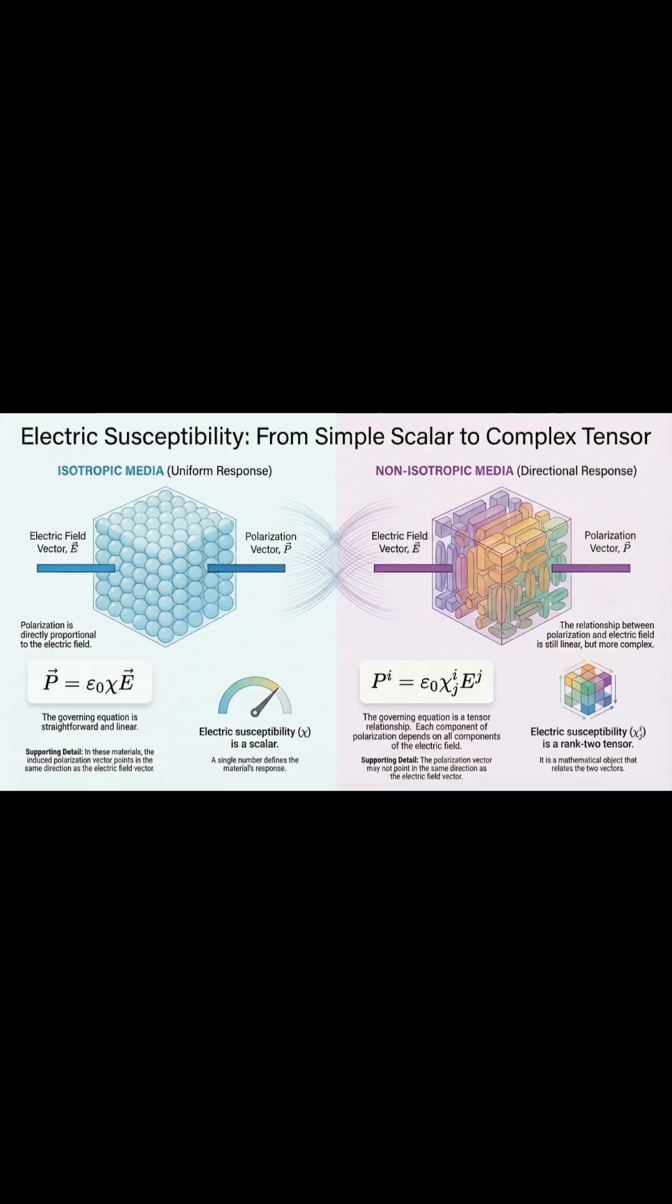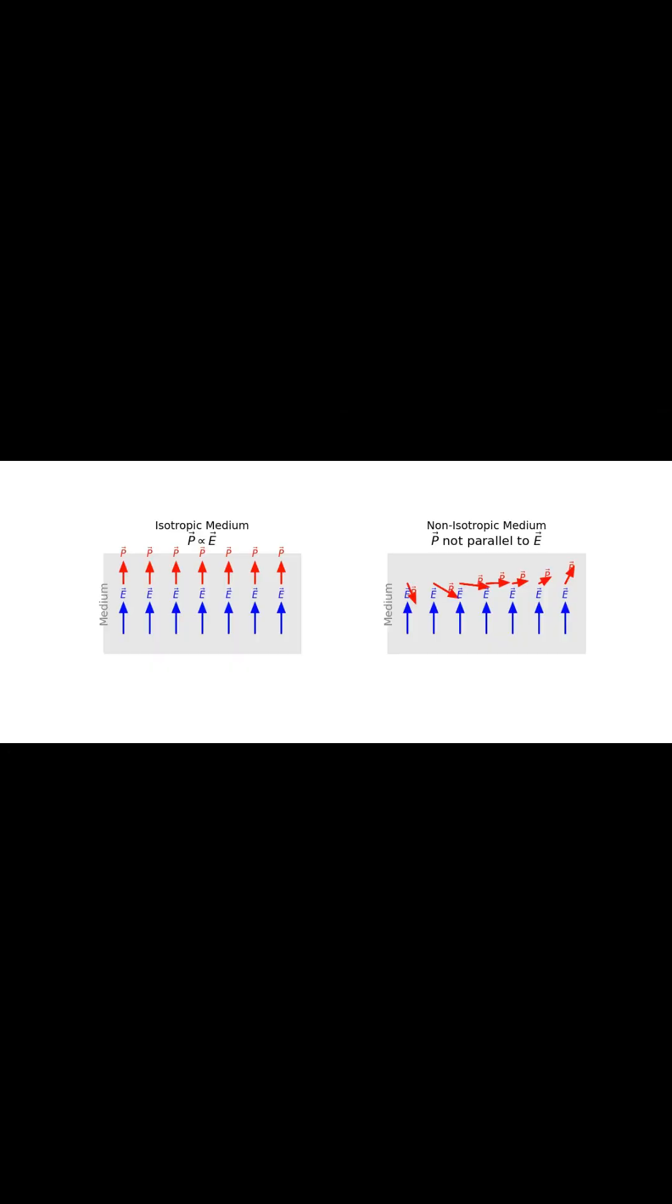Second, this structural uniformity leads to some really simple math. To describe an isotropic material's response, all we need is one simple number, a scalar constant called the electric susceptibility. It's really just a measure of how easily the material polarizes. And since the response is always parallel, that single number tells you the whole story.